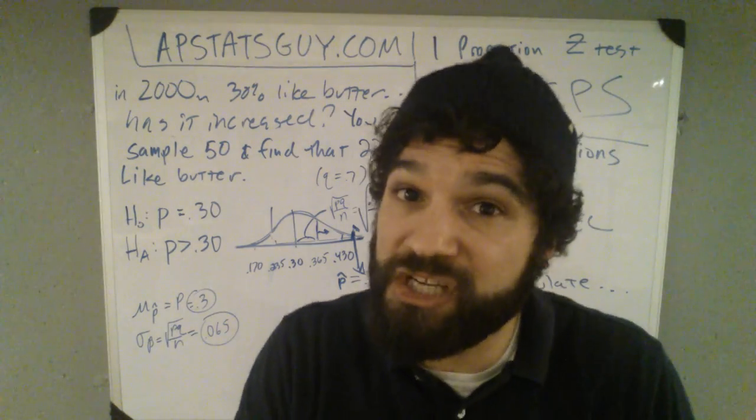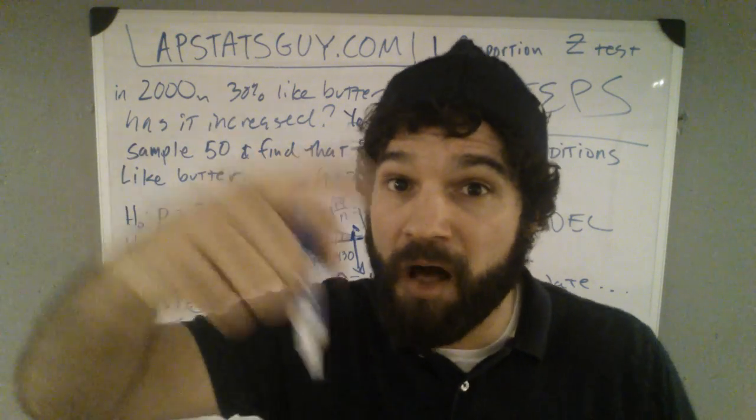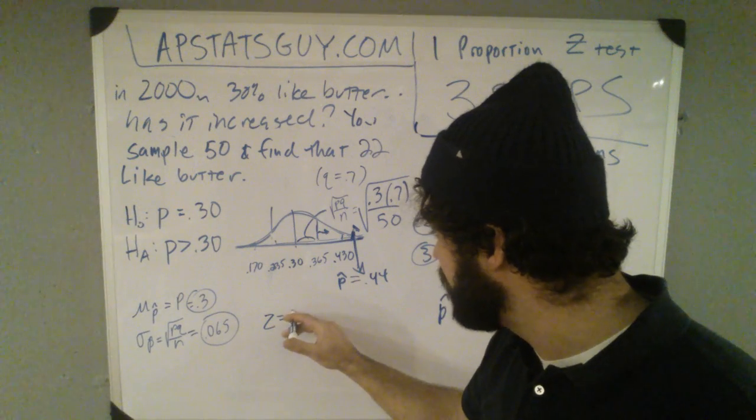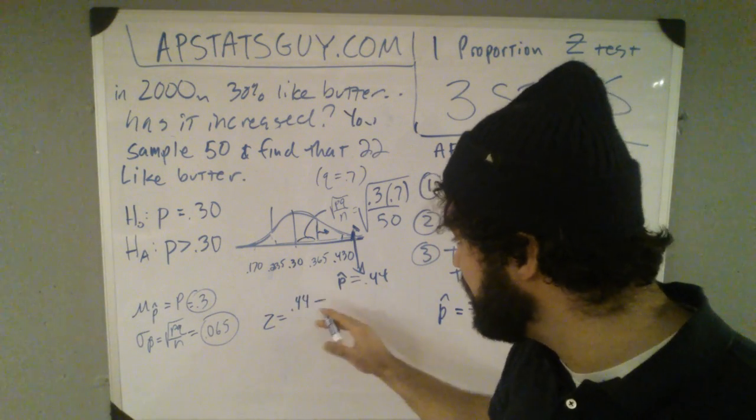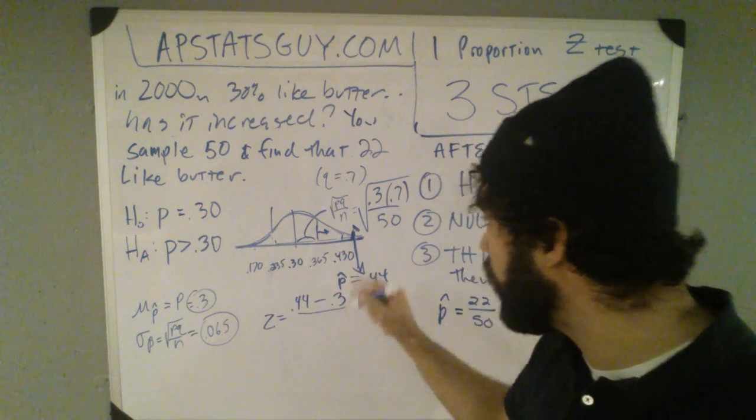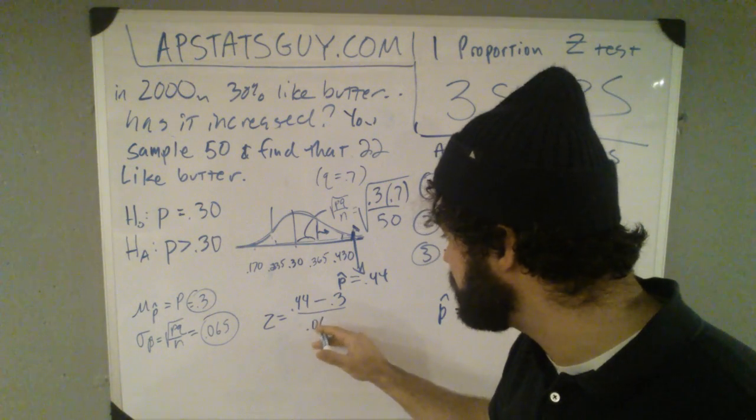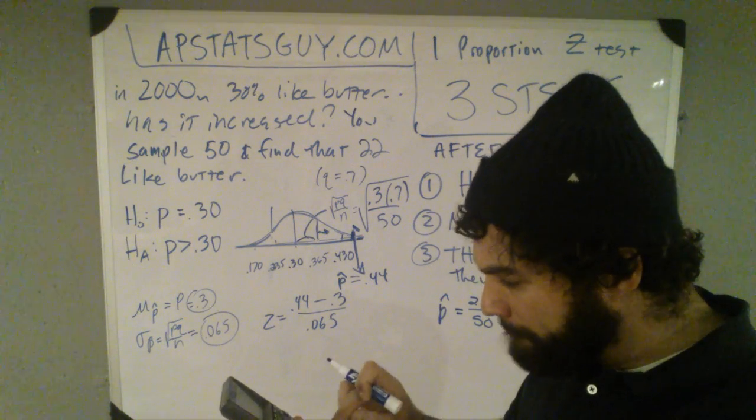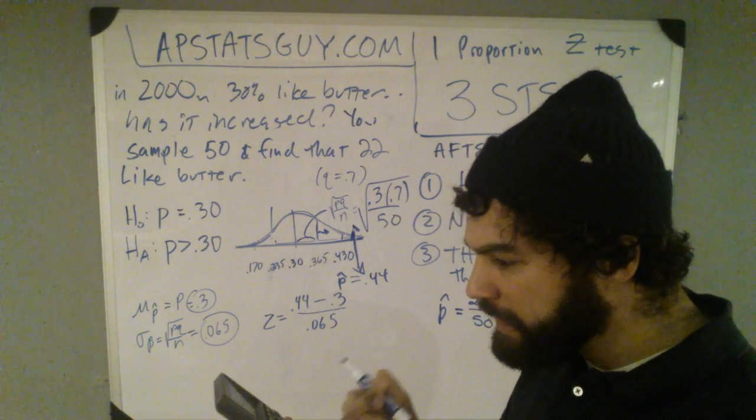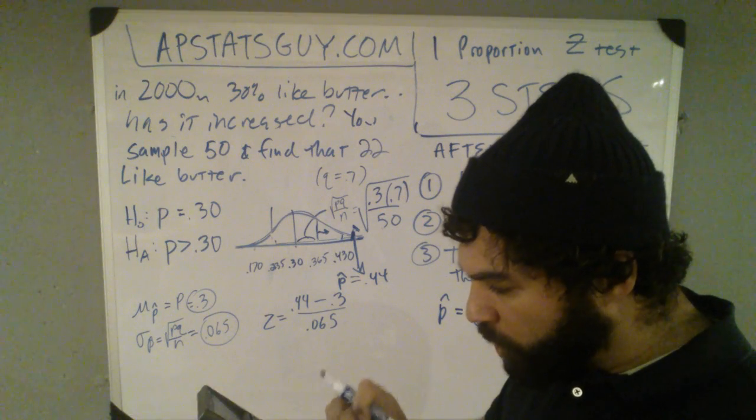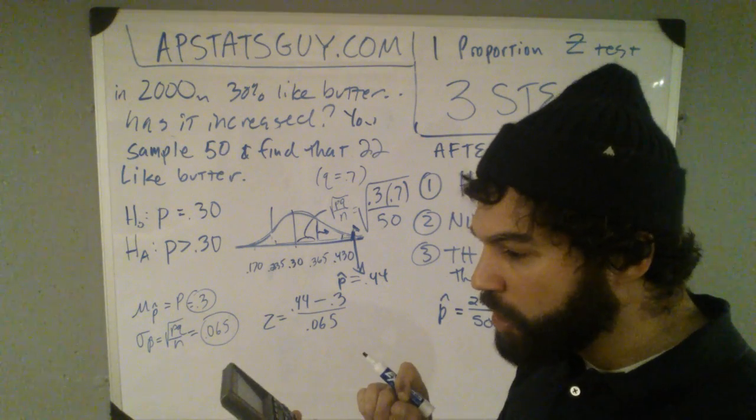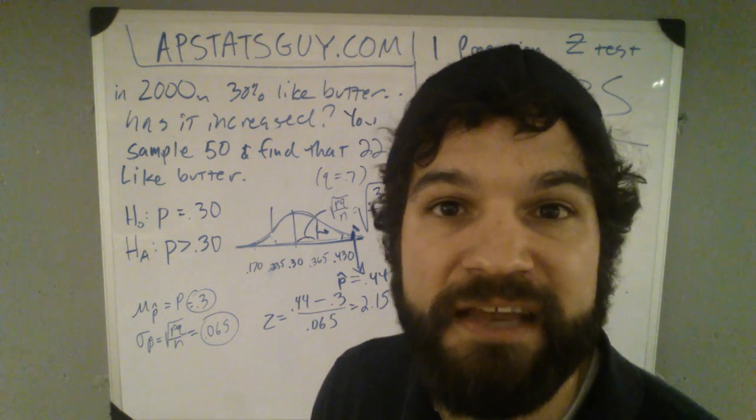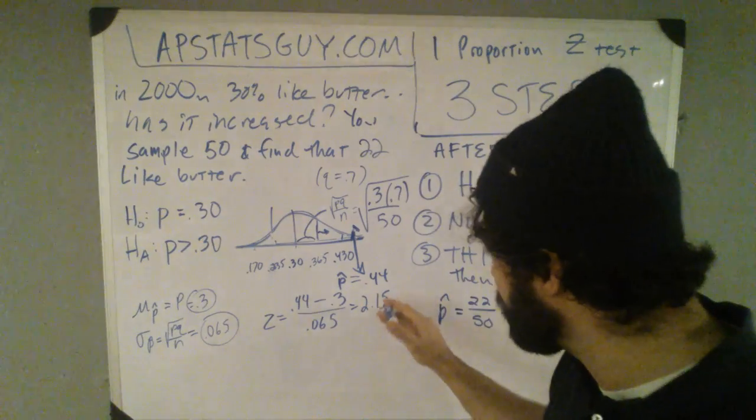First, let's find a z-score. Now we're going through the normal model again. Let's find my z-score. Well, my z-score is 0.44 minus the mean all over the standard deviation, 0.065, let's do that calculation, 0.44 minus 0.3 divided by 0.065 is 2.15 standard deviations away from the mean.